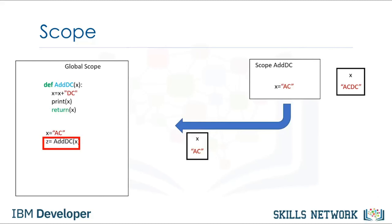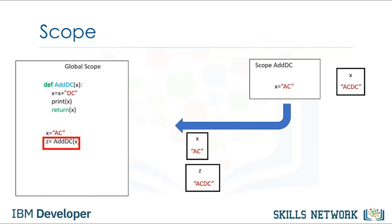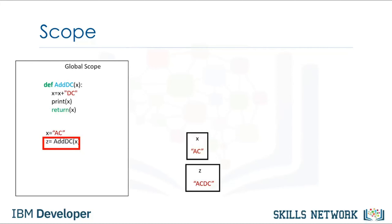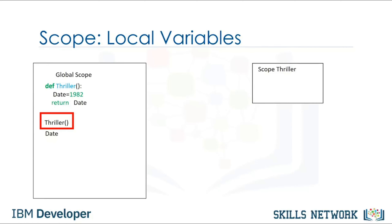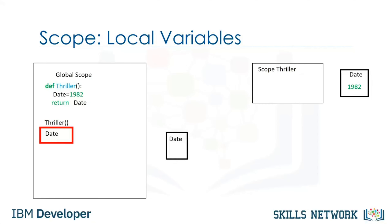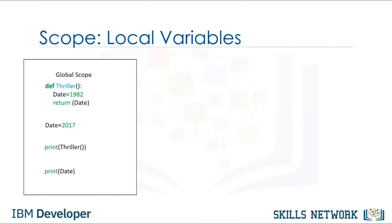After the value is returned, the scope of the function is deleted. Local variables only exist within the scope of a function. Consider the function thriller — the local variable date is set to 1982. When we call the function, we create a new scope. Within that scope, the value of date is set to 1982. The value of date does not exist within the global scope. Variables inside the global scope can have the same name as variables in the local scope with no conflict.